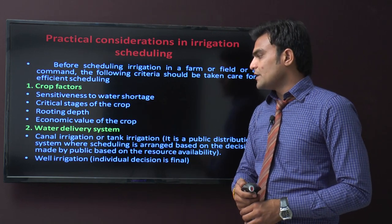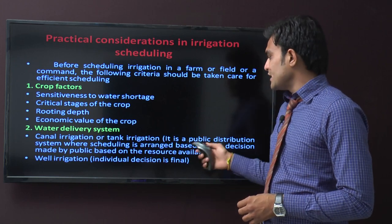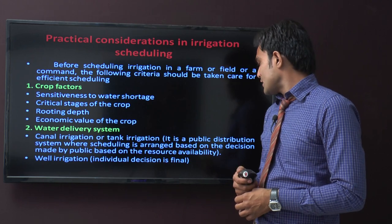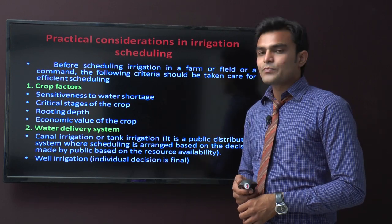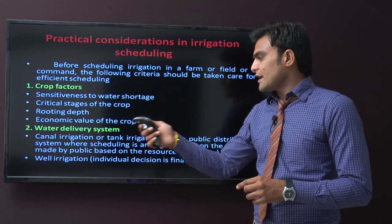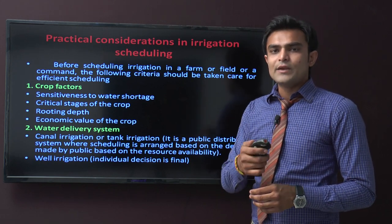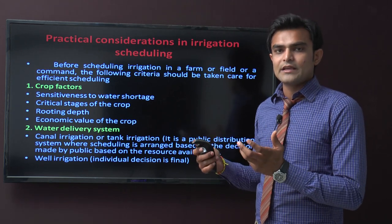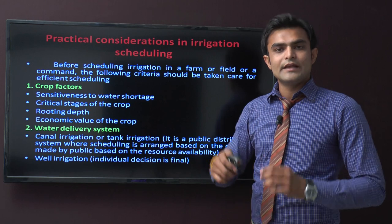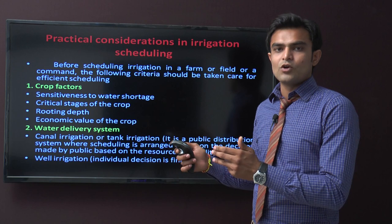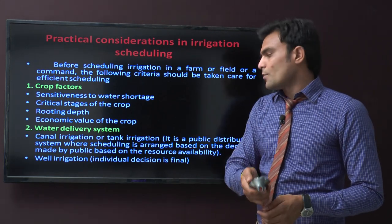The second consideration is the water delivery system — how to deliver water from one place to another for better crop production. Canal irrigation or tank irrigation are public distribution systems where scheduling is arranged based on decisions made by the public and resource availability. There are two types: public irrigation and personal irrigation systems. Public irrigation includes canals, rivers, and check dams. Personal irrigation includes wells or bore wells on individual farm areas.